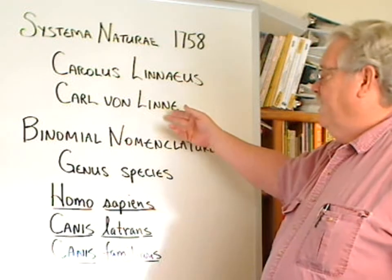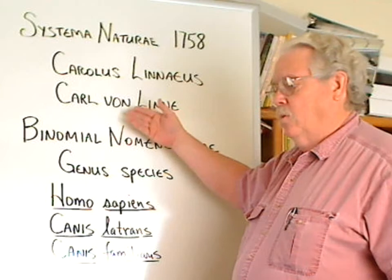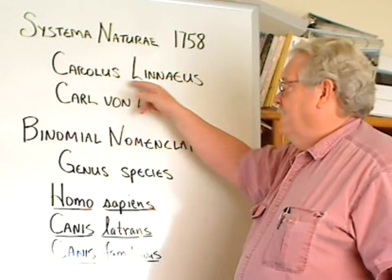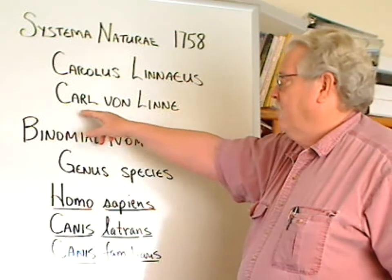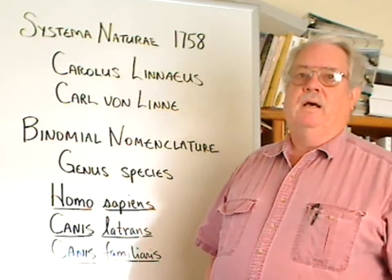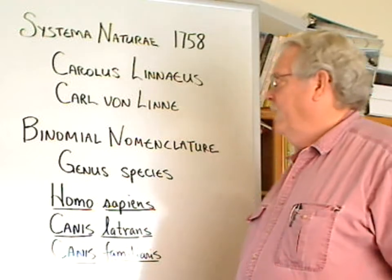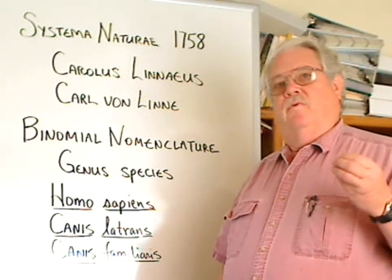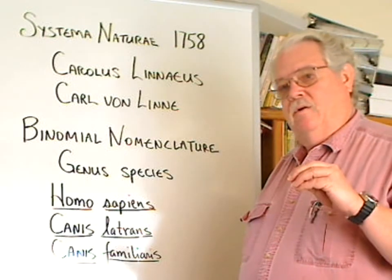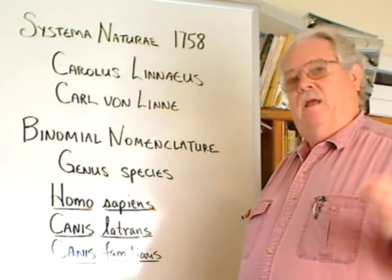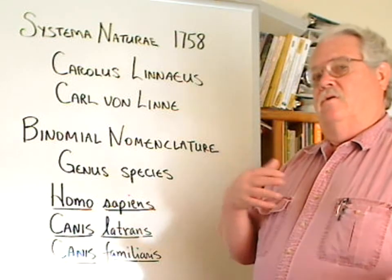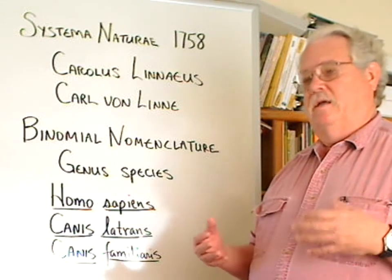So Carl von Linn, when he was going to announce his way of naming organisms, wrote in Latin and translated his name into Latin. He himself was a minister, a physician, and a natural historian from Sweden. He saw it as his duty to fulfill parts of the Bible by continuing what he viewed as Adam's work of naming all living things, but doing it in a scientific manner. So you see there's a cross-purposes here of religion and science with Carl von Linn.